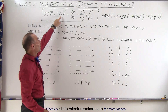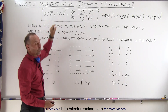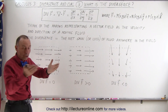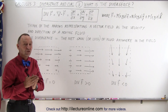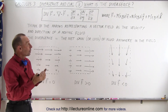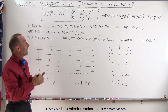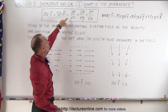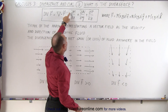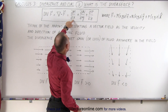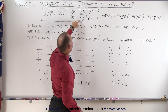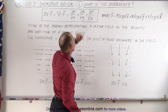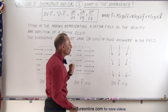Notice that this is like a dot product. Just like with a dot product, when you multiply two vectors together via dot product, you get a scalar quantity. And here it is: it's the partial of m with respect to x, the partial of n with respect to y, and the partial of p with respect to z.